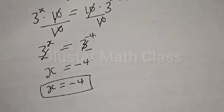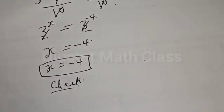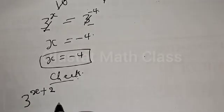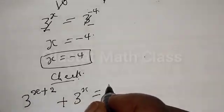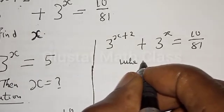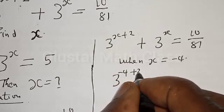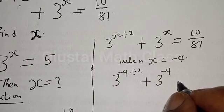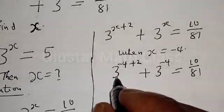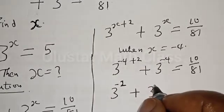Let's check to confirm if our answer is right or wrong. We have the original equation: 3 raised to power x plus 2, plus 3 raised to power x, must be equal to 10 divided by 81. When x is equal to negative 4, we have 3 raised to power negative 4 plus 2, plus 3 raised to power negative 4, equal to 10 divided by 81. That gives us 3 raised to the power negative 2, plus 3 raised to the power negative 4.